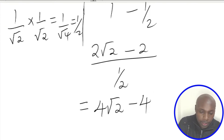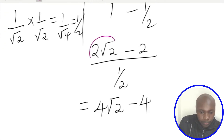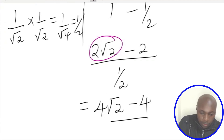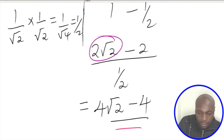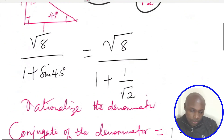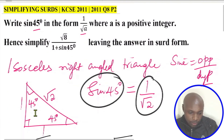Dividing each term by 1 half: 2 root 2 divided by 1 half gives 4 root 2, then subtract 2 divided by 1 half which gives 4. So the final answer in simplest surd form is 4 root 2 minus 4.